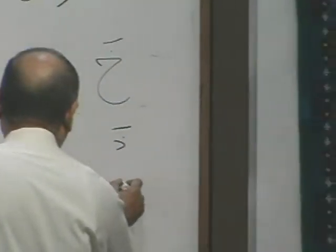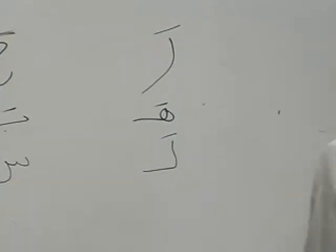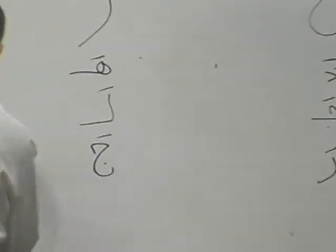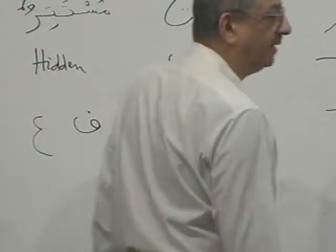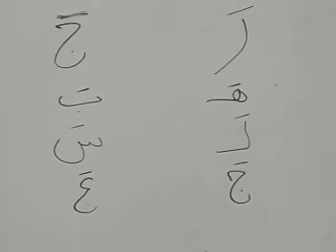Then I say Jalasa. Are you with me, brothers and sisters? What is it? Fata, Fata, Fata. Then I write down one more word: Raja'a. These are the four verbs in your book one, that's all. But we are going to do about 50 of them.